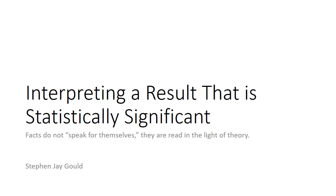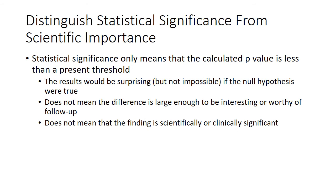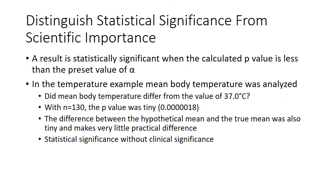Let's interpret a result that is statistically significant. We'll distinguish statistical significance from scientific importance or clinical significance. Statistical significance only means that the calculated p-value is less than a preset threshold — the results will be surprising but not impossible if the null hypothesis is true. There's still a chance this could be due to variation alone. This does not mean that the difference is large enough to be interesting or worthy of follow-up, and it does not mean that the finding is scientifically or clinically significant.